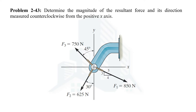Welcome everyone. In this video we are going to solve problem number 43 taken from chapter number 2, Force Vectors, from the book Engineering Mechanics: Statics by R.C. Hibbeler. In this problem we are asked to determine the magnitude and direction of the resultant force due to three forces acting on this member. The direction should be measured from the positive x-axis in the counterclockwise direction.